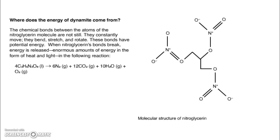Where does the energy of dynamite come from? The chemical bonds between the atoms of nitroglycerin molecules are not still. They're constantly moved. They bend, stretch, and rotate. These bonds have potential energy. Remember, potential means they can release energy. When nitroglycerin bonds break, the energy is released. Enormous amounts of energy in the form of heat and light in the following reaction. So our nitroglycerin turns into six atoms of dinitride, 12 molecules of carbon dioxide, 10 molecules of water, and one molecule of oxygen gas. And it's all because these bonds are breaking.